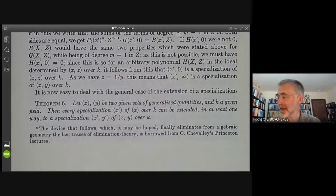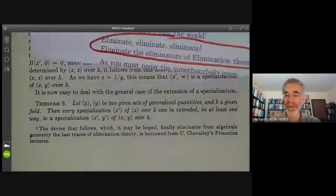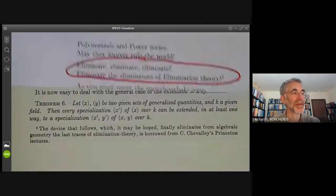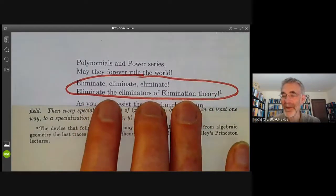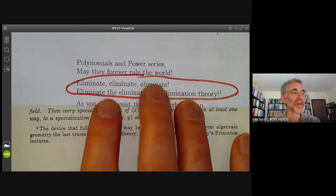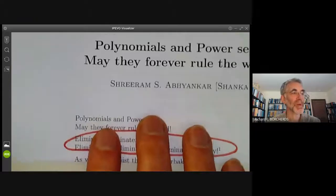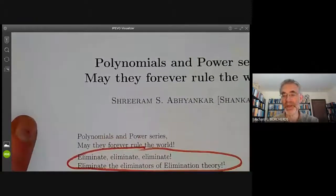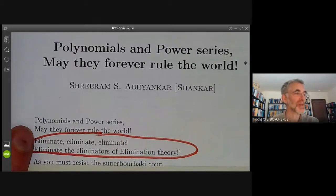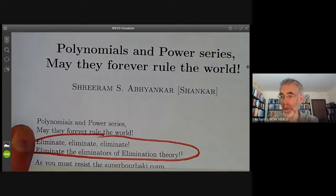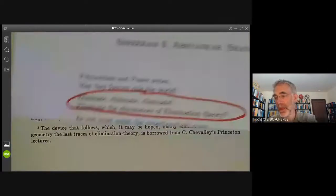On the other hand, Abhyankar wrote a famous poem about elimination theory with this line in it saying, eliminate the eliminators of elimination theory. It's compulsory to quote this whenever you discuss elimination theory. So this is a poem titled polynomials and power series, may they forever rule the world.